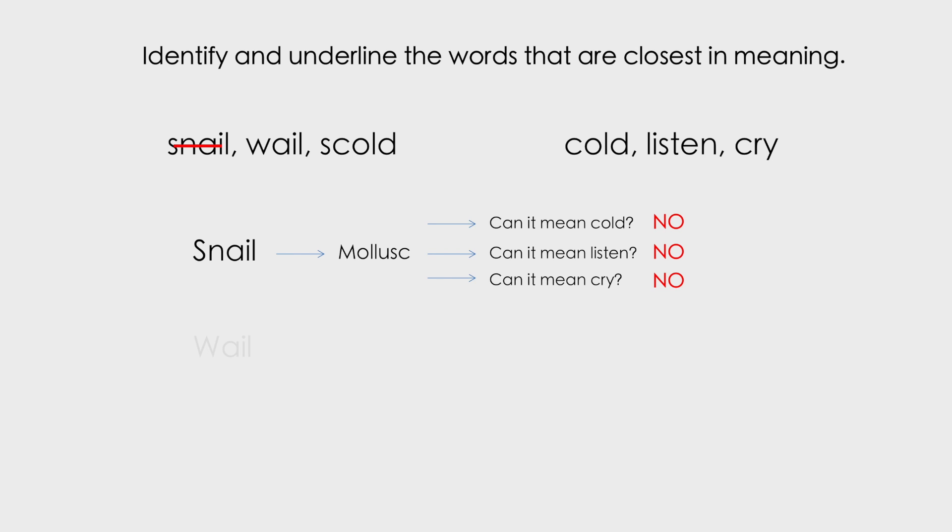Next, wail. So what is a wail? It's a sound of distress. Okay, so now let's work through the words in the other list again. Can it mean cold? No. Can it mean listen? No. Can it mean cry? Yes, it can. Okay, so a cry and a wail. Both things that suggest distress or sadness. So we'll work through the last word anyway, just in case we've misinterpreted something.